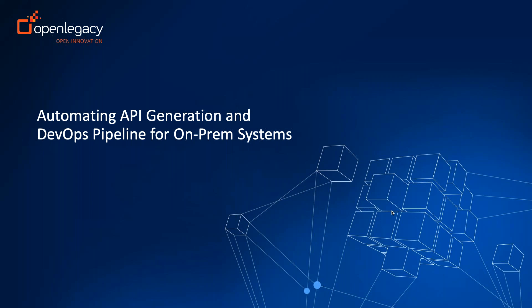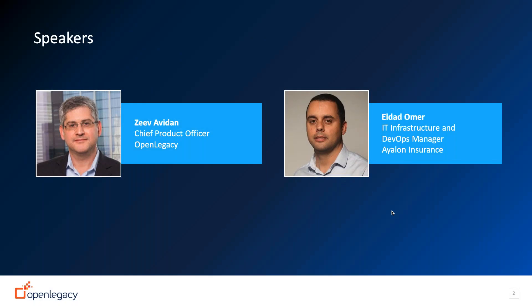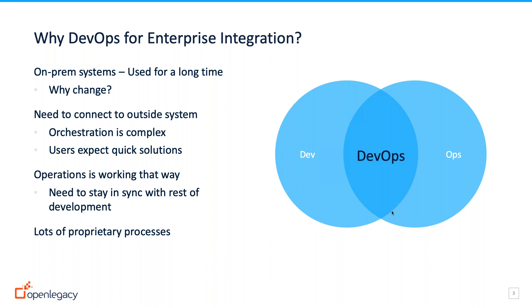With that, we'll kick off today's webinar, which is Automating API Generation and DevOps Pipeline for on-prem systems. Our speakers today are Zev Avidan, who is the Chief Product Officer at OpenLegacy, and Eldad Omer, who is the IT Infrastructure DevOps Manager at Ayalon. Thank you both for joining me today.